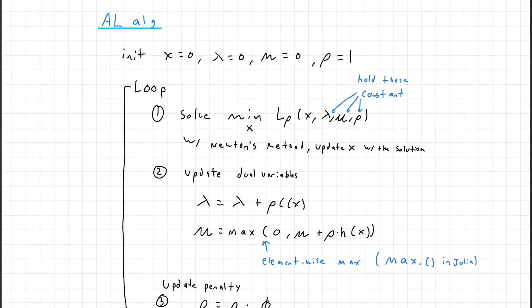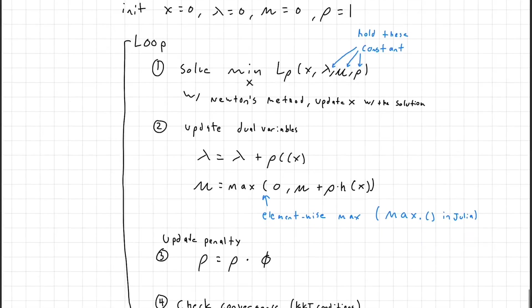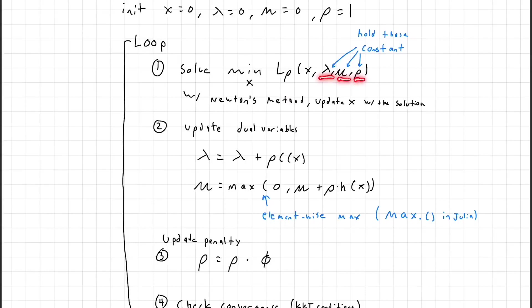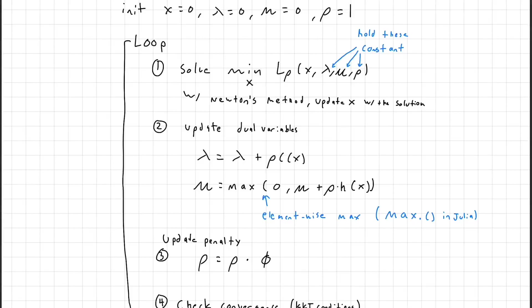Now we can walk through the full augmented Lagrangian algorithm. We initialize everything: x = 0, lambda = 0, mu = 0, and an initial penalty — we can use rho = 1. The loop has four steps. Step one: minimize the augmented Lagrangian with respect to x, keeping lambda, mu, and rho constant. We do this using Newton's method, forming analytical Hessians and gradients. Since the constraint functions are linear, the augmented Lagrangian is itself quadratic, so writing out the Hessian and gradient is straightforward.